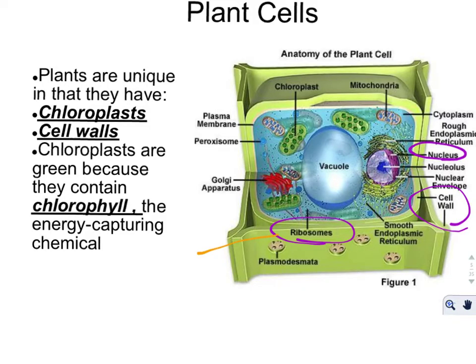Here we're going to have one of our students describe the parts of a plant cell. Plants are unique in that they have chloroplasts. Cell walls and chloroplasts are green because they contain chlorophyll, the energy-capturing chemical. Chloroplasts make the color green because they reflect the green wavelength of light. If you see on the anatomy of a plant cell here, your chloroplasts are the green membrane-bound organelle.